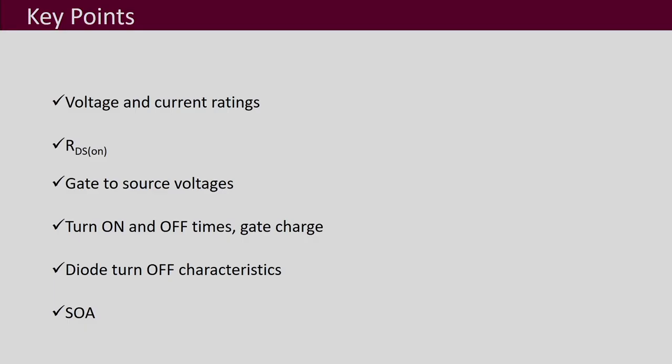The key points of this lecture: voltage and current ratings are the important ratings provided in the data sheet; you should also look for R_DS_on value; gate-to-source voltage and the threshold voltage; turn-on and turn-off times and associated gate charges and capacitances; diode turn-off characteristics including reverse recovery; and your SOA graph.